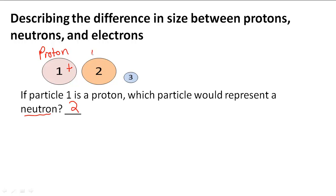So 2 is the neutron, and because the electrons are much smaller and have much less mass than a neutron or a proton, then this must be an electron.